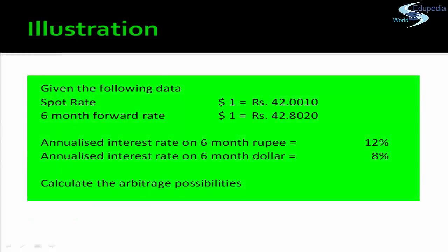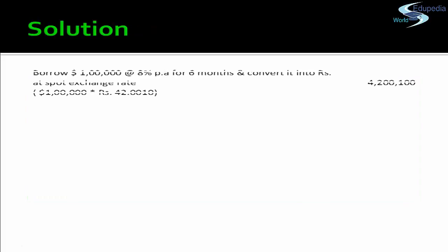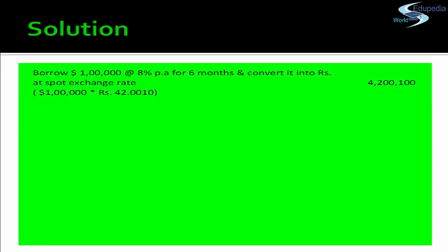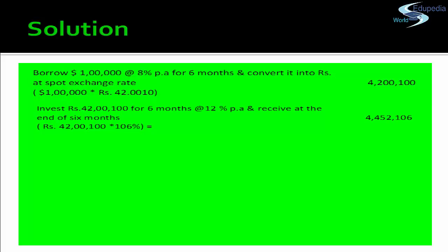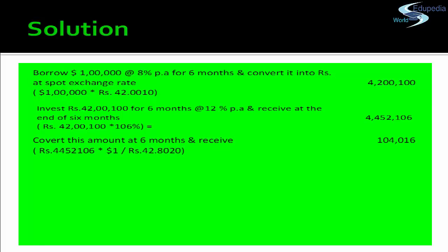Example: Spot rate USD 1 = ₹42.0010; six-month forward rate = ₹42.8020. Interest rate in rupees is 12% per annum; in dollars it is 8% per annum. You borrow USD 1,00,000 at 8% per annum for six months and convert at the spot rate, receiving ₹42,00,100. You invest this in India for six months at 12% per annum, receiving ₹44,52,106. You then convert this back to dollars at the six-month forward rate of ₹42.8020, receiving USD 1,04,016.